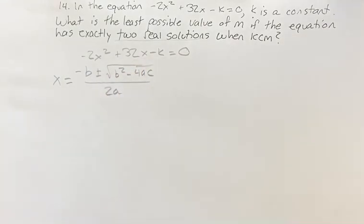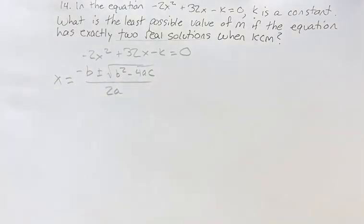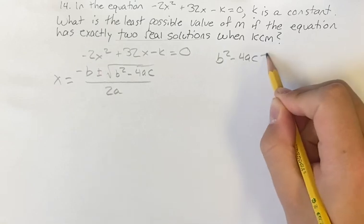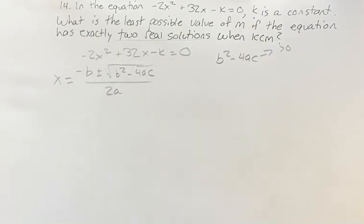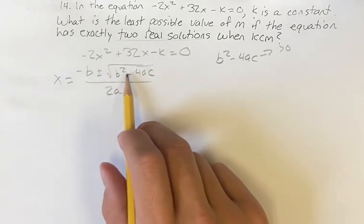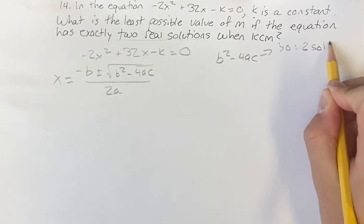If we're looking at this square root, if b squared minus 4ac is greater than 0, then you're going to have two solutions: negative b plus the square root of whatever this is, and negative b minus the square root of whatever this is. So you have two solutions.